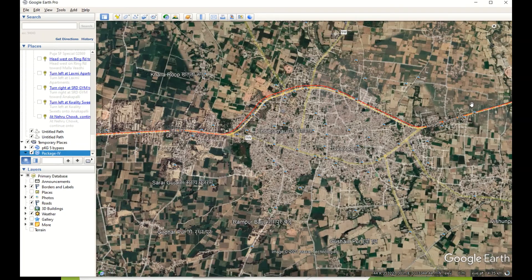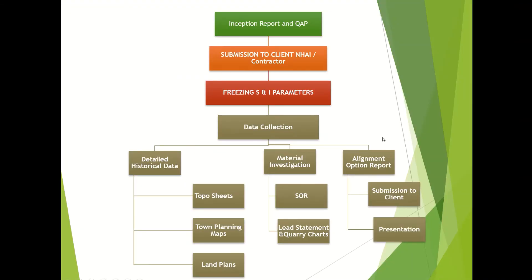Once the alignment option is concluded, you have to give a presentation - covering which bypass is required in which area and where we can go through the existing alignment. You prepare this type of presentation and give it to the client. Once you get the approval, then only you proceed for the topographic survey. Before that, don't go for a topographic survey. In Google Earth you can easily do the alignment options. After that you prepare the presentation, submit it, and once the approval is given, everything will be fine.